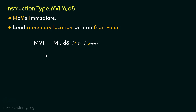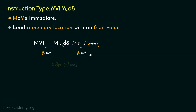What will be the size of this instruction? For MVI M, it will require 8 bits of space, and along with that we are sending the 8-bit data. So cumulatively, this entire instruction falls under the category of 2-byte long instructions.